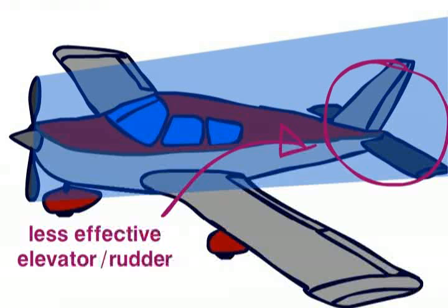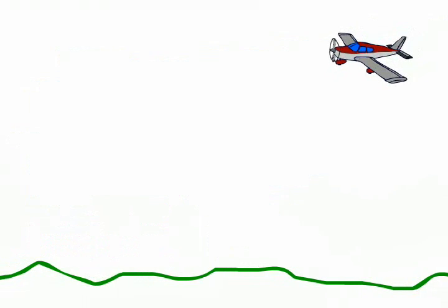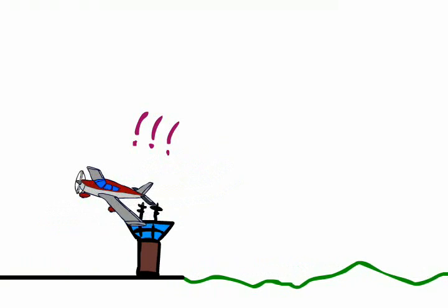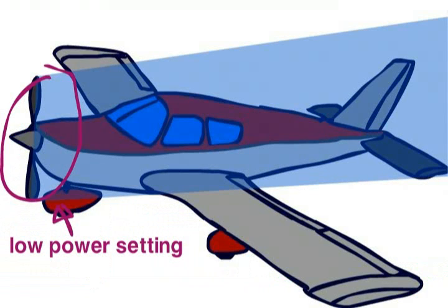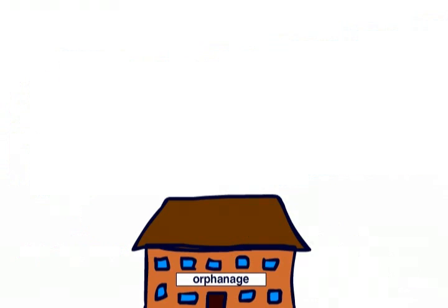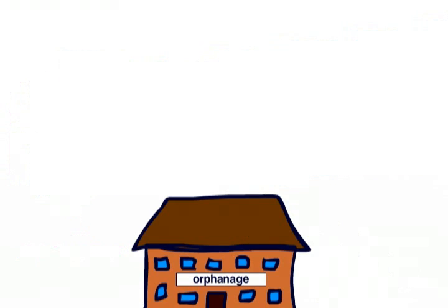This is important to bear in mind when performing a go-around, and therefore quickly moving from a very low to a very high power setting. Using the same heavy-handed control movements after applying full power may have unfortunate consequences.